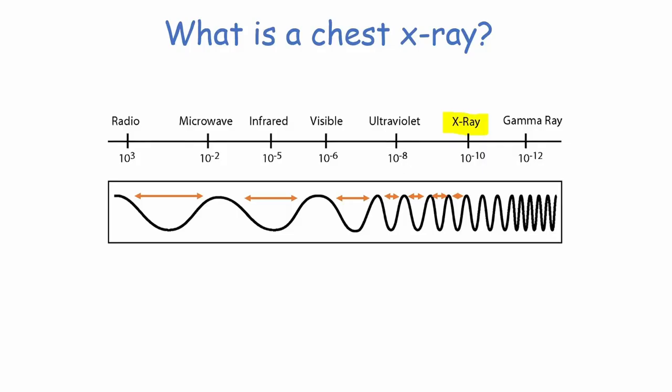An X-ray is a waveform that's part of the electromagnetic spectrum. It's similar to radio waves, microwaves, and even the waves that make up visible light. Each of these has a specific wavelength which gives it unique characteristics. A unique characteristic of X-rays is that they're able to penetrate human body tissue but are also largely absorbed by denser tissues.